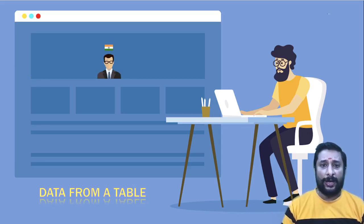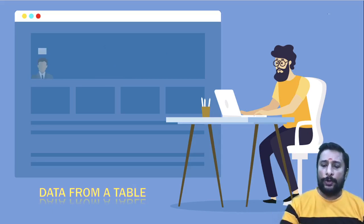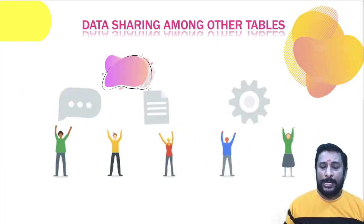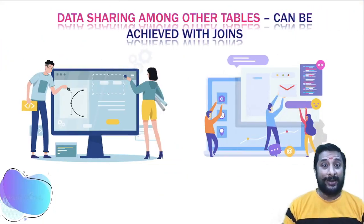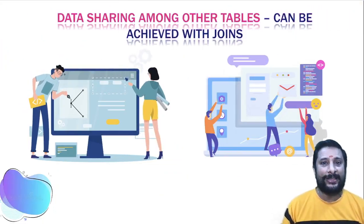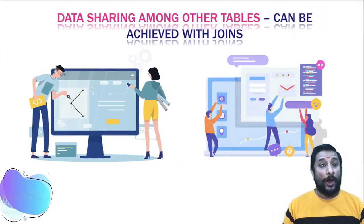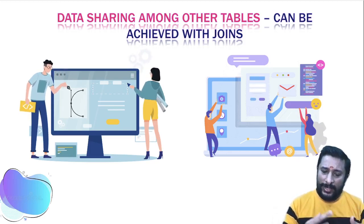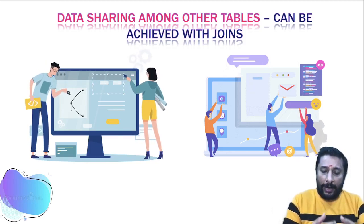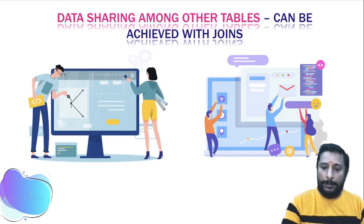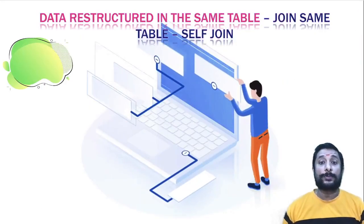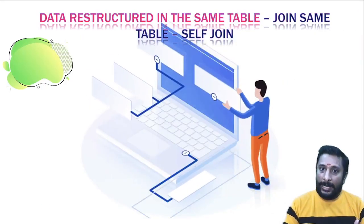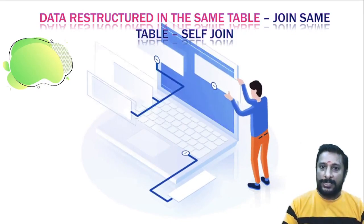Data is available in a table, and from the table I'm able to retrieve the data. In some scenarios I get data from multiple tables, so we need to merge the tables to get the data — that concept is called joining the tables. But there are cases where I need to restructure and get data from the same table itself. In that case we use the concept of self-join: joining the same table to itself and merging it to get the data.